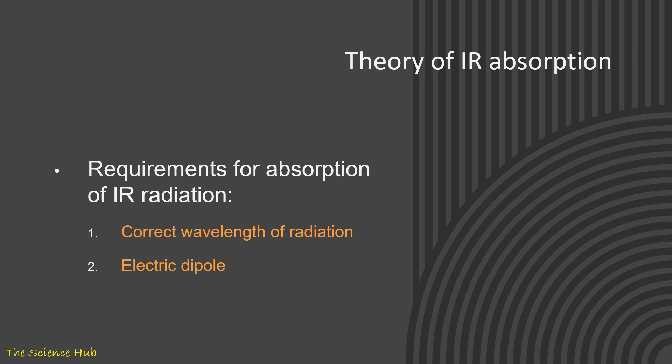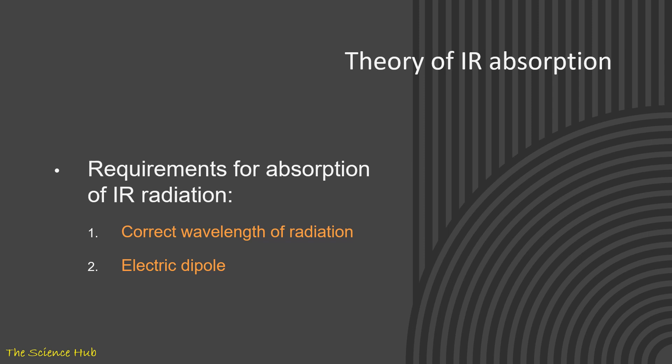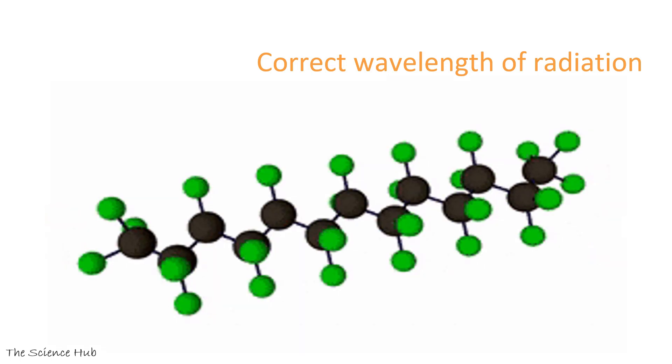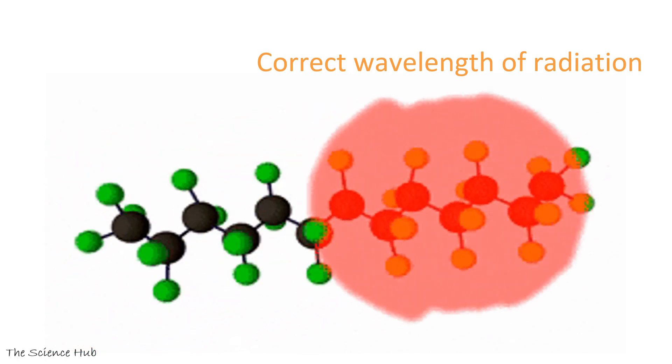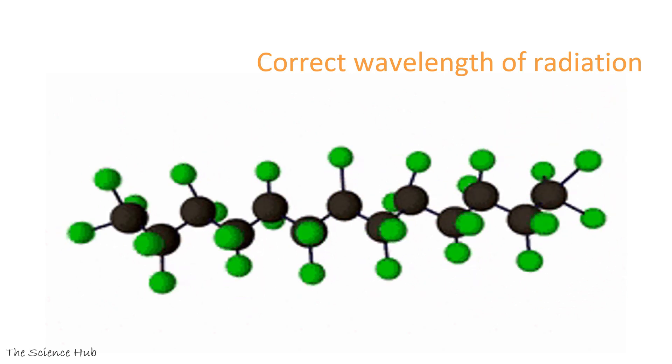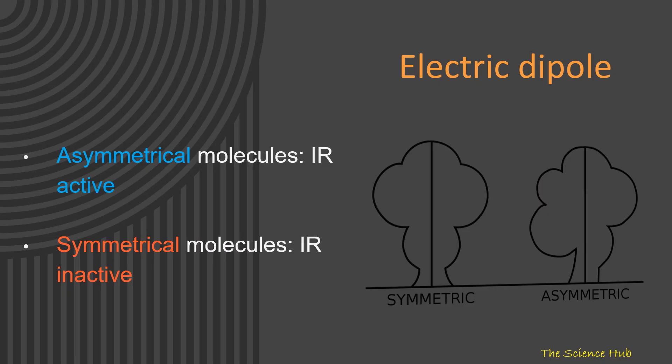Requirements for absorption of IR radiation are correct wavelength of radiation and electric dipole. Here you can observe correct wavelength of radiation: when we apply particular wavelength to the sample, then molecules will vibrate with particular frequency. When molecules vibrate with particular frequency, it comes under absorption and will be detected by detectors.